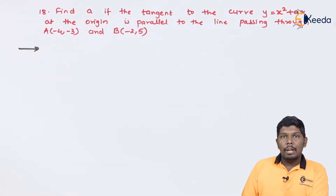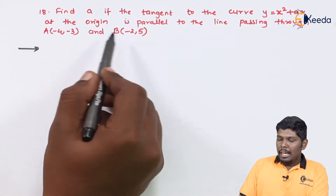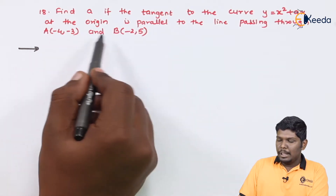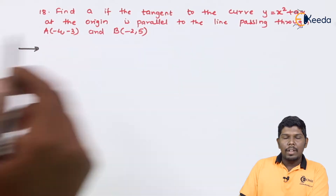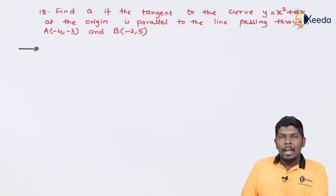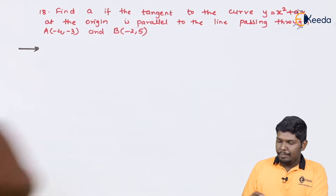Indirectly, they have given the slope of the tangent. We can find the equation of the line passing through A and B. We know that if two points on a line are given, we can find the equation using the two-point form. Let us find the equation of the line and then we will find the slope of the tangent.